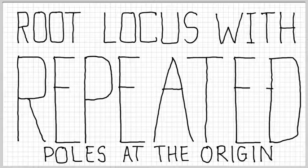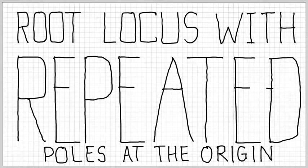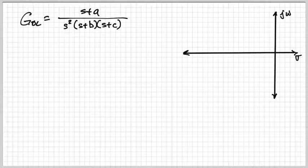In this video we're going to see what root locus with repeated poles at the origin is like. Let's assume that you've got an open loop transfer function with one zero at s plus a, a repeated pole at the origin s squared, and poles at s plus b and s plus c.